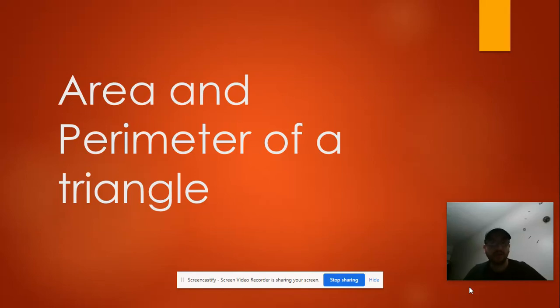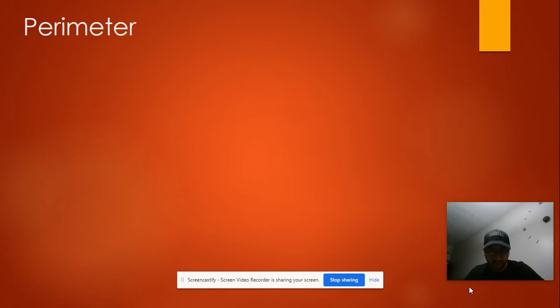Okay, today we're going to learn how to find the area and the perimeter of a triangle. Let's see some examples first of the perimeter.